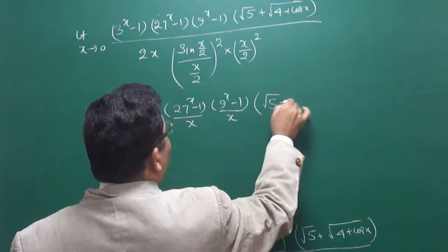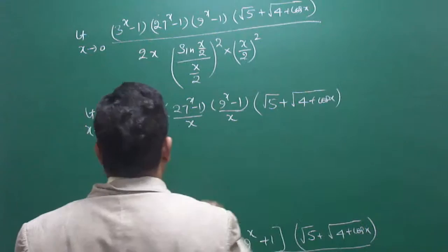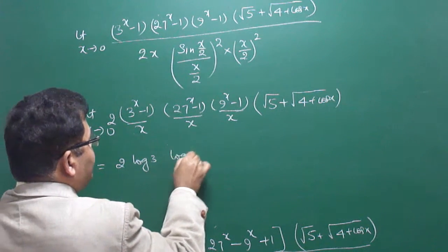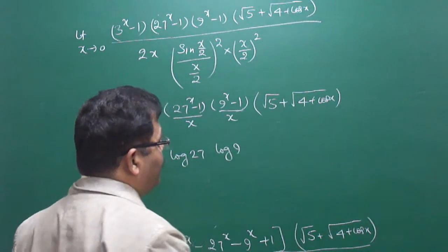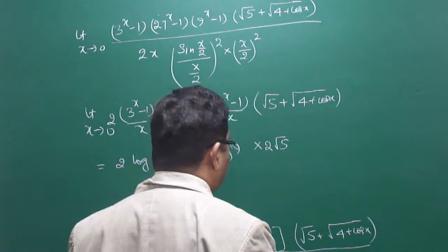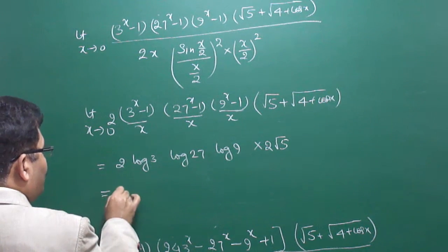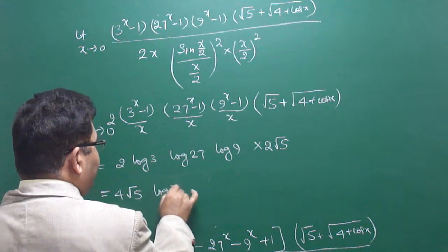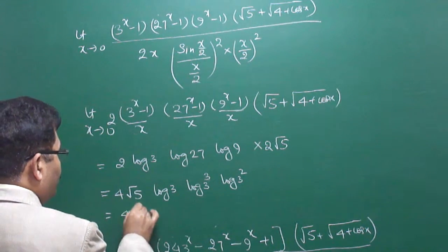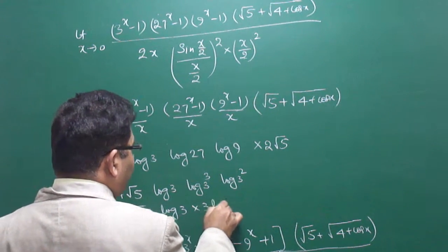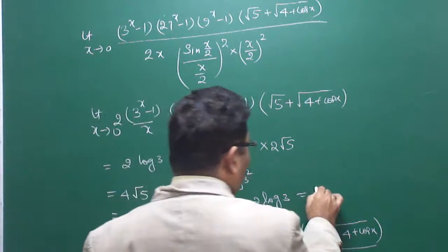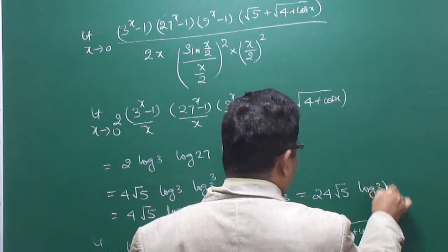At x = 0: √(4 + cos 0) = √5, so the denominator term becomes √5 + √5 = 2√5. Numerator: log 3 · log 27 · log 9 = log 3 · 3 log 3 · 2 log 3 = 6(log 3)³. Denominator: 2 · 2√5 = 4√5. So the answer is 6(log 3)³ / (4√5) ... combining the full expression gives 24(log 3)³ / (4√5), which simplifies to the final answer: 24(log 3)³ / (4√5).